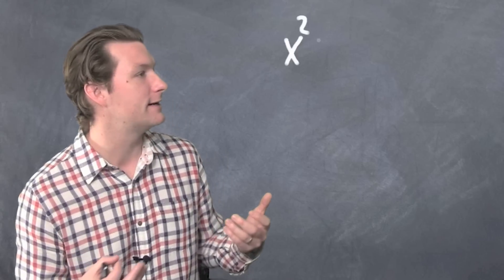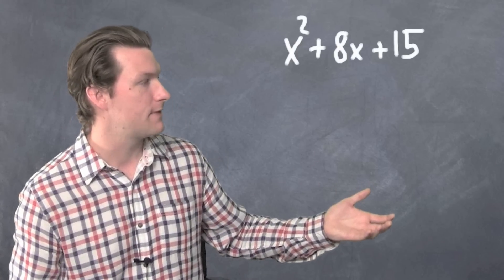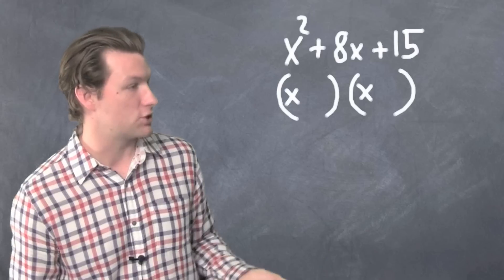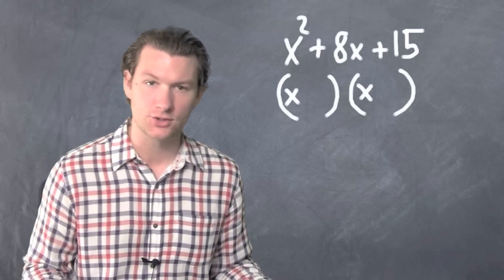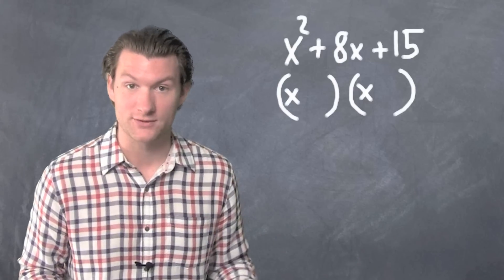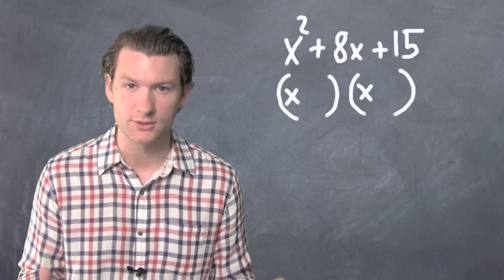Let's say we were given x squared plus 8x plus 15. The answer we're looking for is going to be a set of two parentheses with an x in front of each of them. We've got to search for the numbers that are missing from each of those parentheses. The way we do that is I want you to focus on two numbers here.